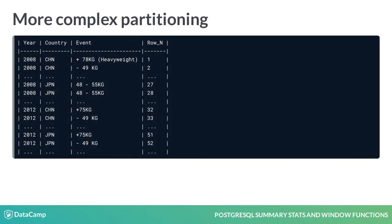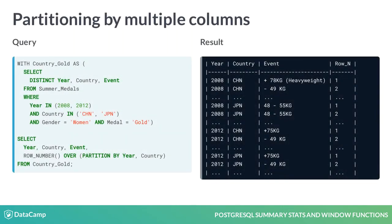Let's look at a more complex partitioning. This result is a row numbering of Chinese and Japanese gold medals awarded to women. The row numbering extends across countries and events, and the goal is to reset it per country and year. Partitioning by year and country in ROW_NUMBER will achieve this. Each combination of the unique values of year and country will be a partition — 2008 China is one partition, 2008 Japan is another, 2012 China is yet another, and so on.